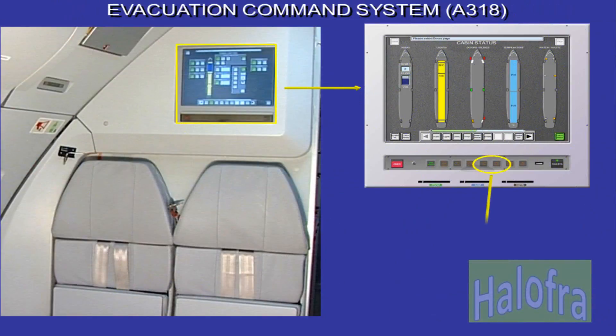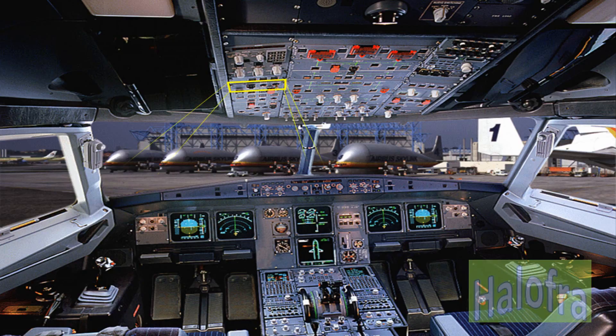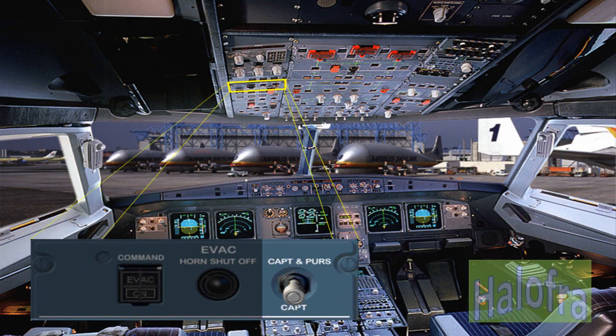On the sub-panel of the new FAP, two evacuation function hard keys are installed: Evac Command to initiate an emergency evacuation, and Evac Reset to reset the evacuation lights and audio alert. On the evac panel in the cockpit, a switch allows the evacuation command to be activated from the purser station and the cockpit, or from the cockpit only.